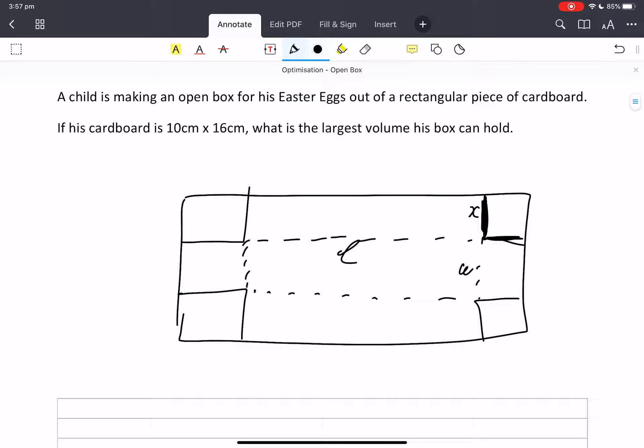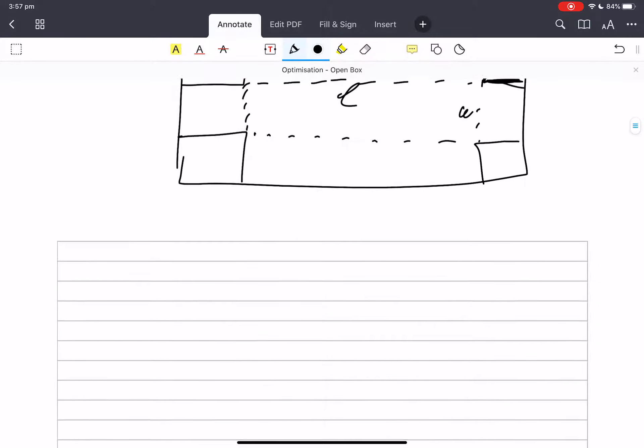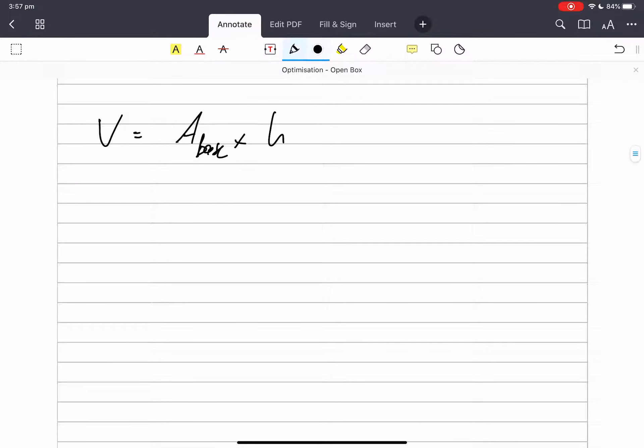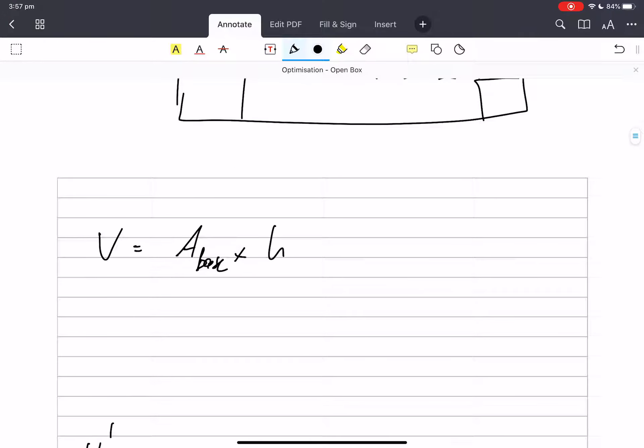Every single optimization thing, you are going to eyeball what you want to minimize or maximize. So here we're maximizing volume. So all of a sudden we know that we're going to want to differentiate volume, set it equal to zero, and get some answers. But we've got a bit of work to do before that.